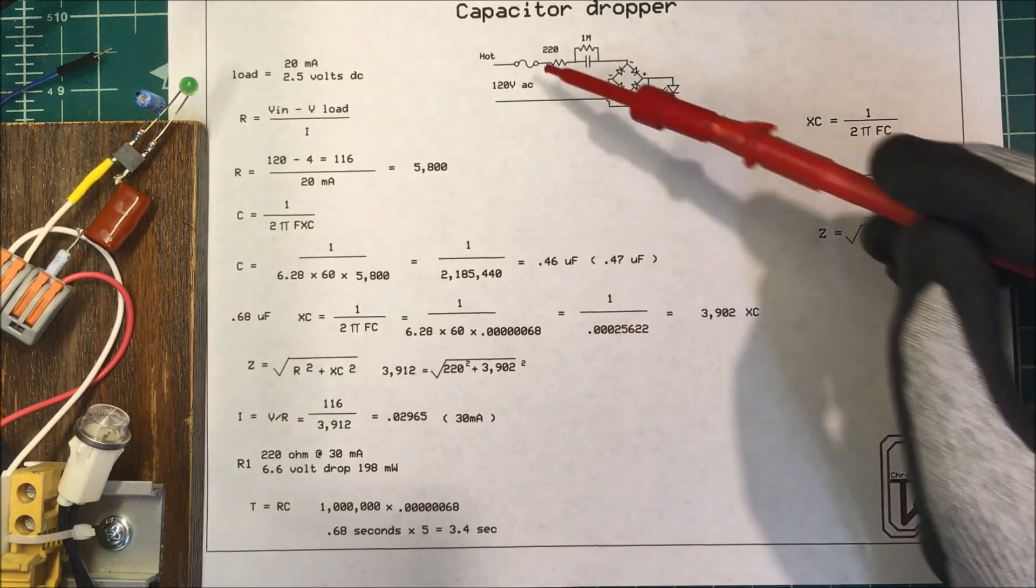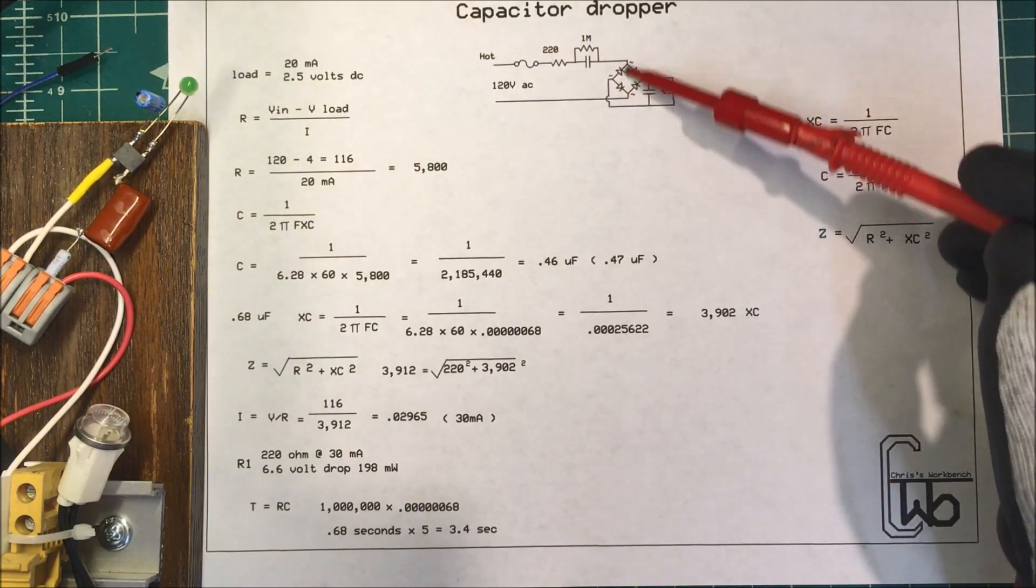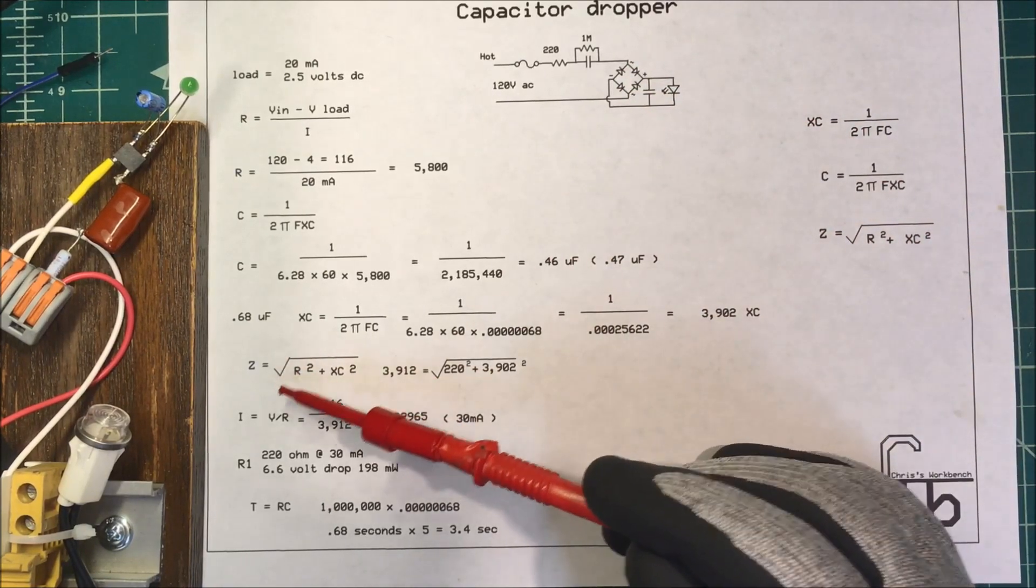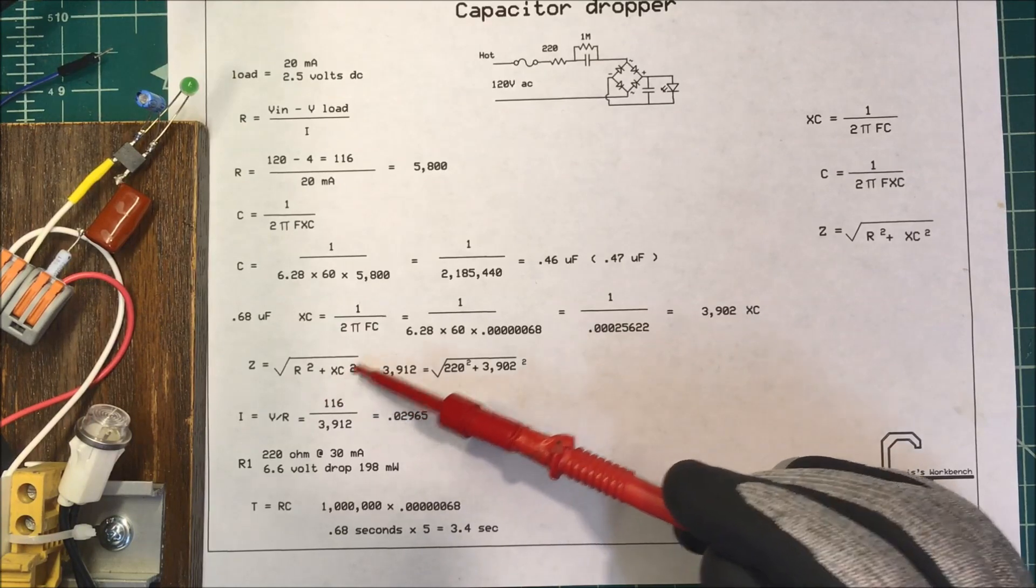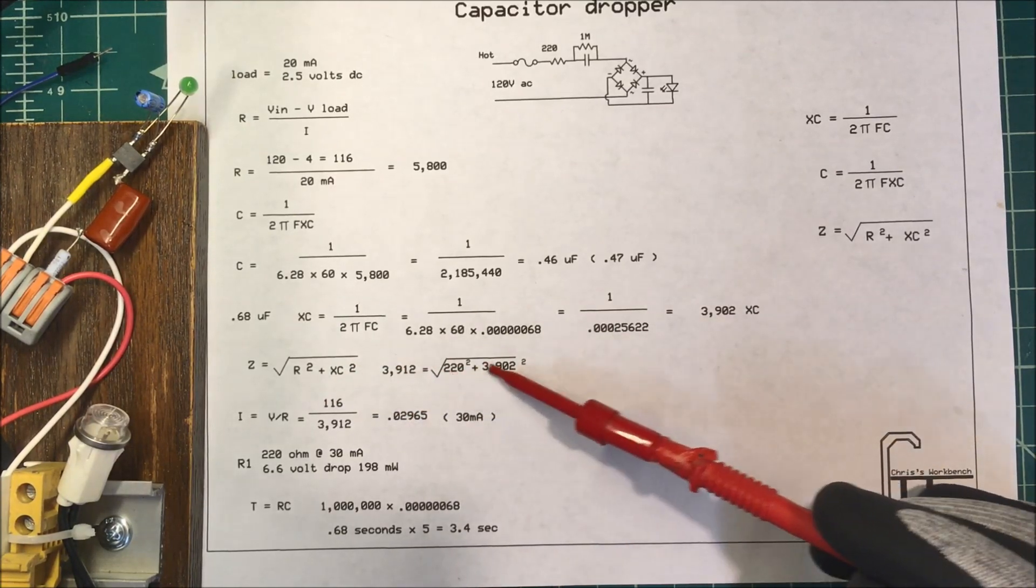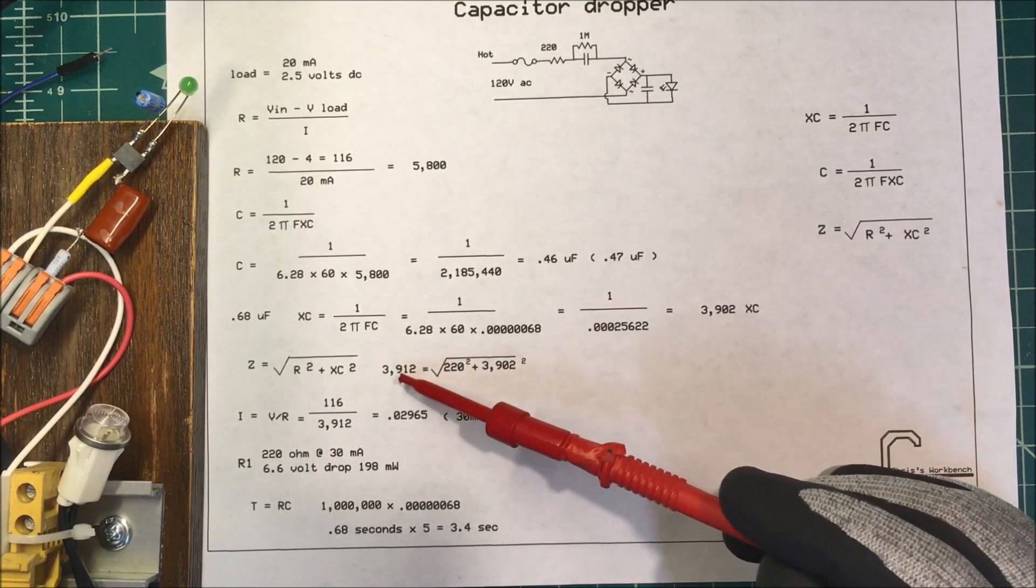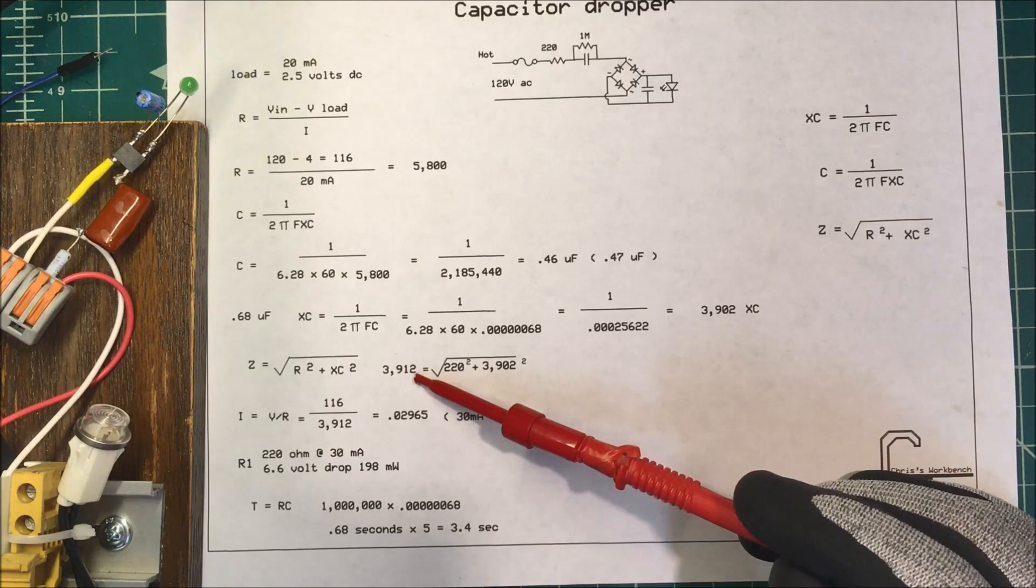Now, to find the impedance of this circuit, I'm leaving out the impedance of this, it's probably about 130 ohms, but we take the square root of the resistance squared plus the capacitive reactance squared. So if I put those figures in here, it's going to come up to 3,912 ohms.